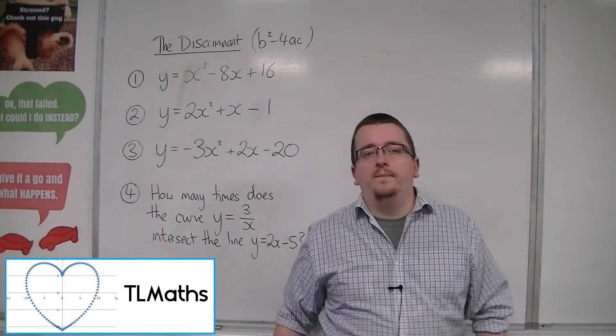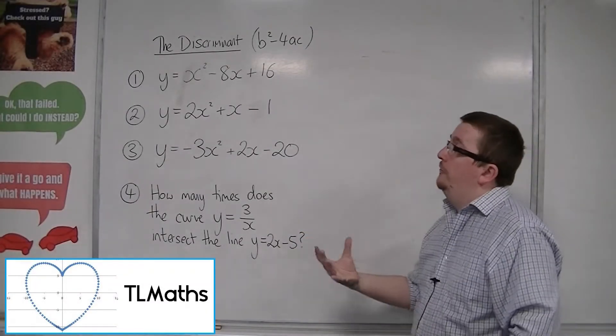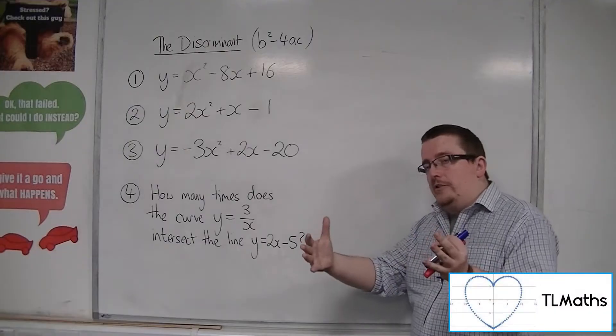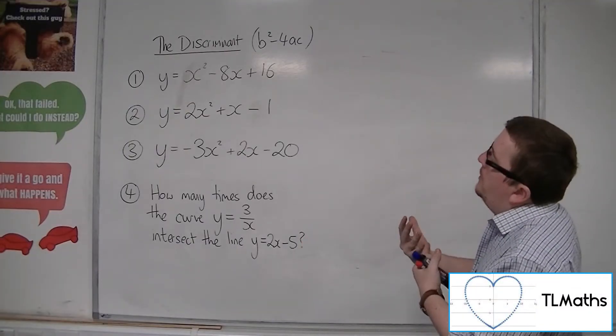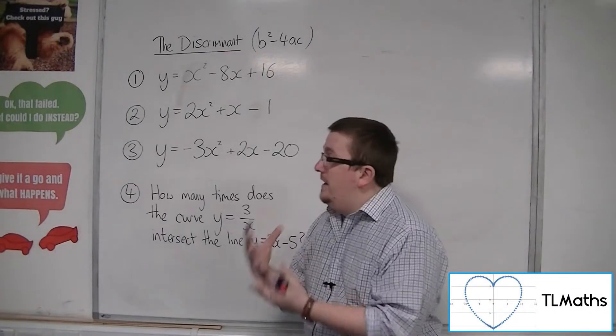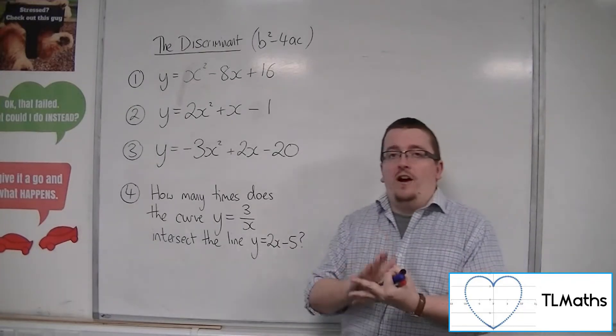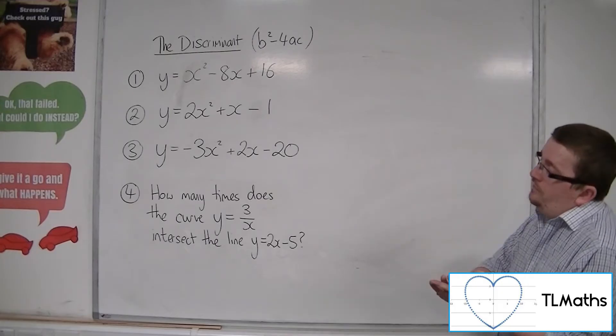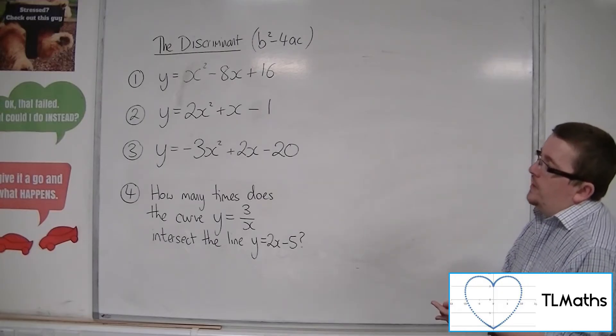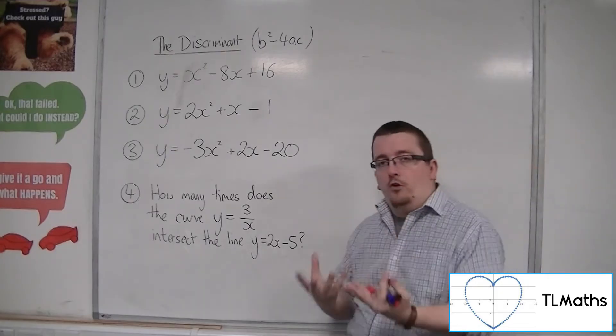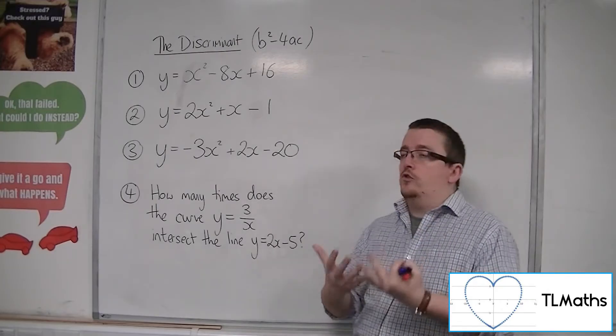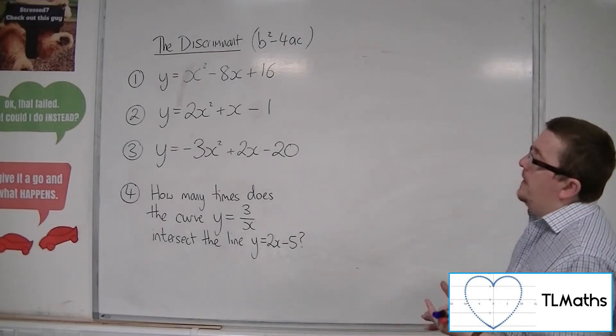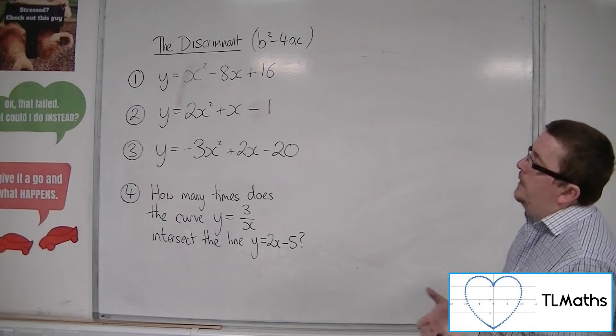So we've seen that the discriminant is that part of the quadratic formula just underneath that square root, the b squared minus 4ac. And that can enable us to determine how many roots, how many real roots, a quadratic actually has. And that then can inform us about where the graph sits in the xy plane.